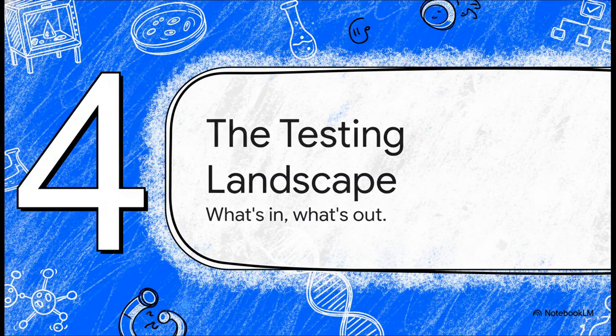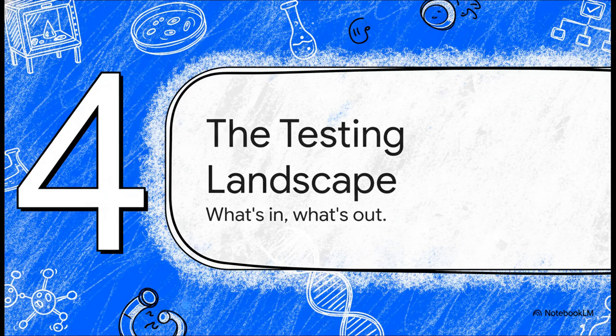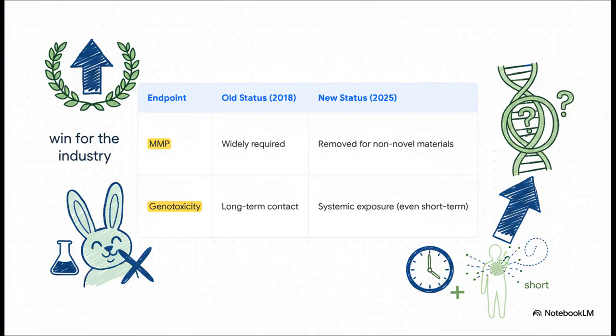All right. So with all these philosophical shifts and new rules, what does it actually mean for the tests we run day to day? Let's take a look at the new testing landscape for biological effect endpoints. Here are two of the absolute biggest shifts. First, and this is a real win for the industry, the material-mediated pyrogenicity test, you know, the rabbit pyrogen test, is pretty much being removed for devices made of common, well-understood materials. That's great news. On the other hand, the consideration for genotoxicity has really expanded. It's not just for long-term implants anymore. Now it has to be evaluated for basically any device that has potential systemic exposure, even if it's only short-term.